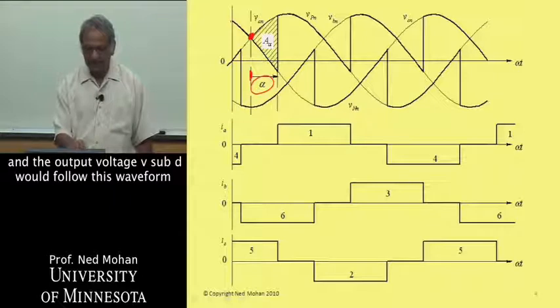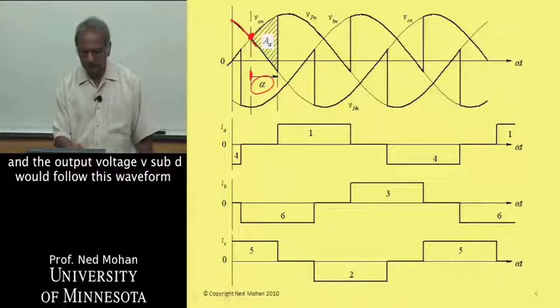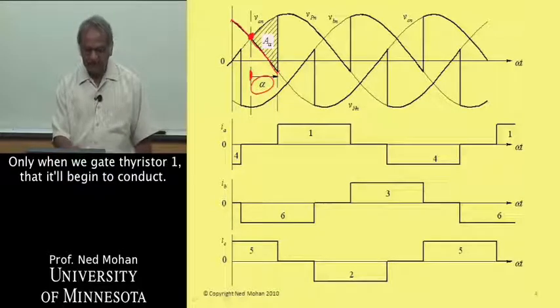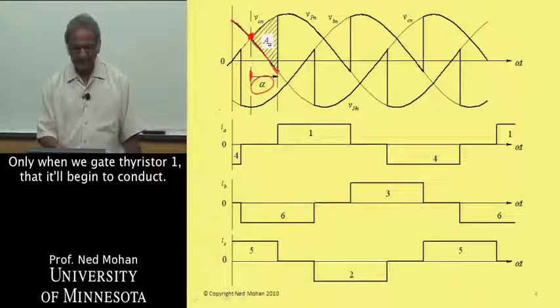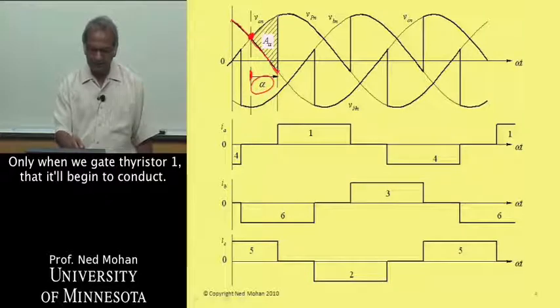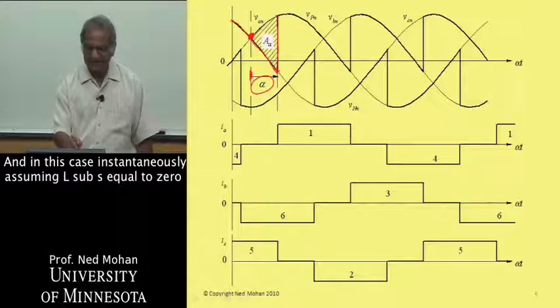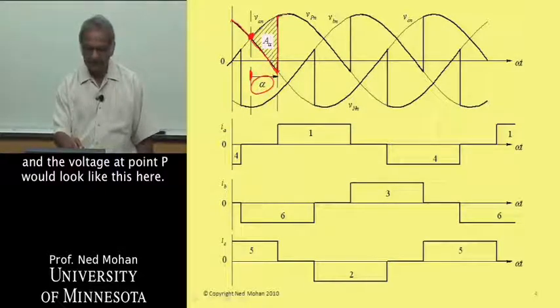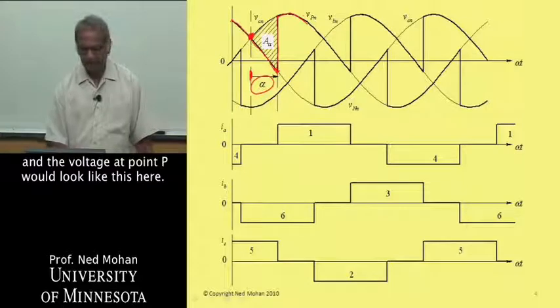The output voltage V sub D would follow this waveform to here. And only when we gate thyristor 1 that it will begin to conduct. And in this case, instantaneously, assuming L sub S equal to 0, the voltage at point P would look like this here.